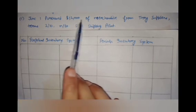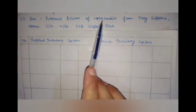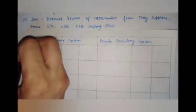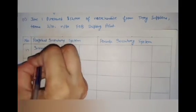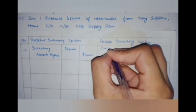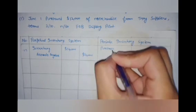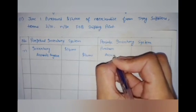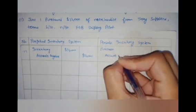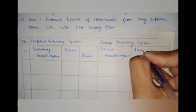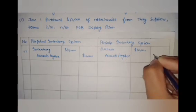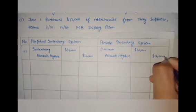Merchandise worth $12,000 are purchased on account. The general entry under the perpetual inventory system will be: Inventory debit, Accounts Payable credit $12,000. Under the periodic inventory system it will be: Purchases debit, Accounts Payable credit $12,000.